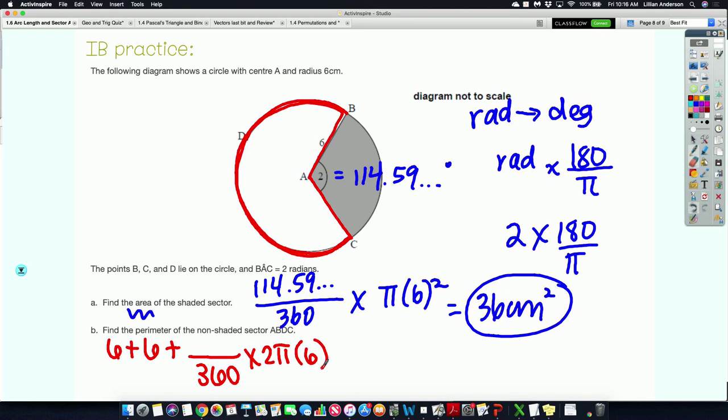Hopefully you're thinking to yourself, well, there are 360 degrees in the circle. So to figure out what this angle is, we need to take that 114 number and subtract it from 360. So that angle that we're going to use is 245.41 and some change. And by performing the arc length of B to C and adding it to the two radii, we will get the perimeter of our non-shaded area. So when I perform the arc length and add the two sixes, that's going to give me 37.699 and some change. So then the perimeter is going to be 37.7 centimeters. So there's an example of an IB problem.